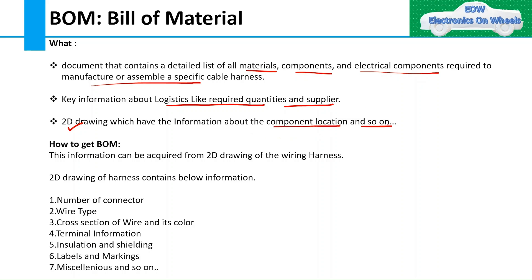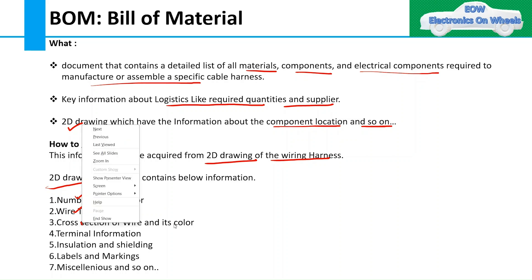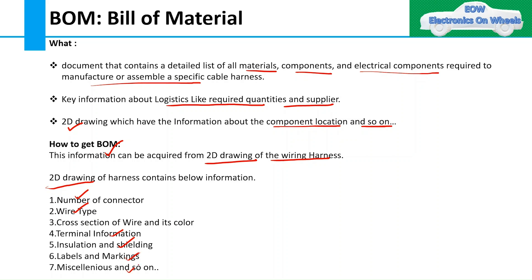Our next point is how to get the bill of materials and its content. Bill of material is generally extracted from the 2D drawing of the wiring harness. The 2D drawing contains the following information: number of connectors, wire type, cross section of wire and its color, terminal information, insulation and shielding, labels and markings, miscellaneous, and so on. We will see all this information in detail in upcoming slides.